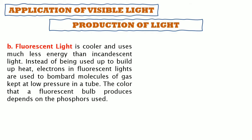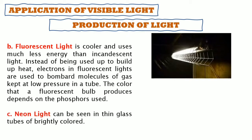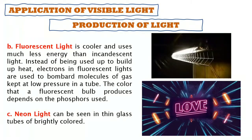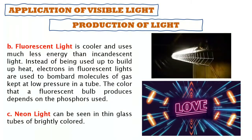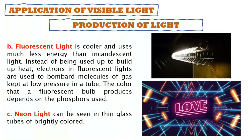Fluorescent light is cooler and uses much less energy than incandescent light. Instead of building up heat, electrons in fluorescent lights bombard molecules of gas kept at low pressure in a tube. The color a fluorescent bulb produces depends on the phosphors used. Neon light can be seen in thin, brightly colored glass tubes and is common on store signage and in music video settings.